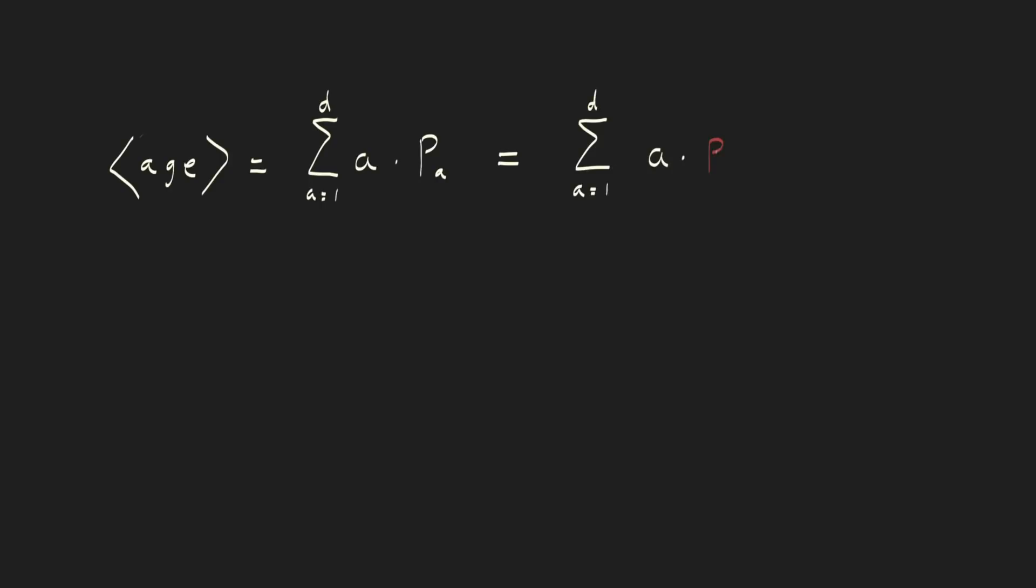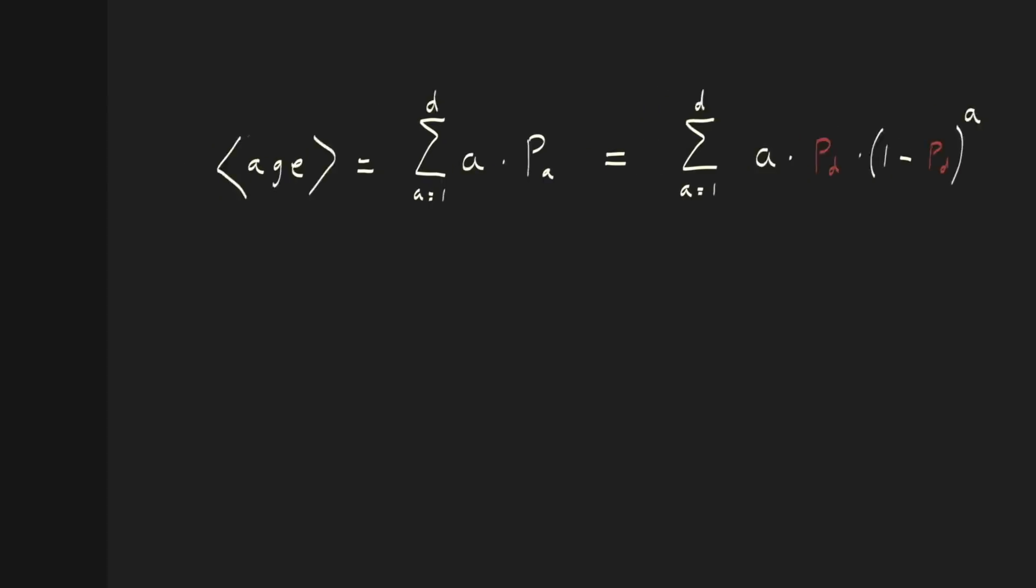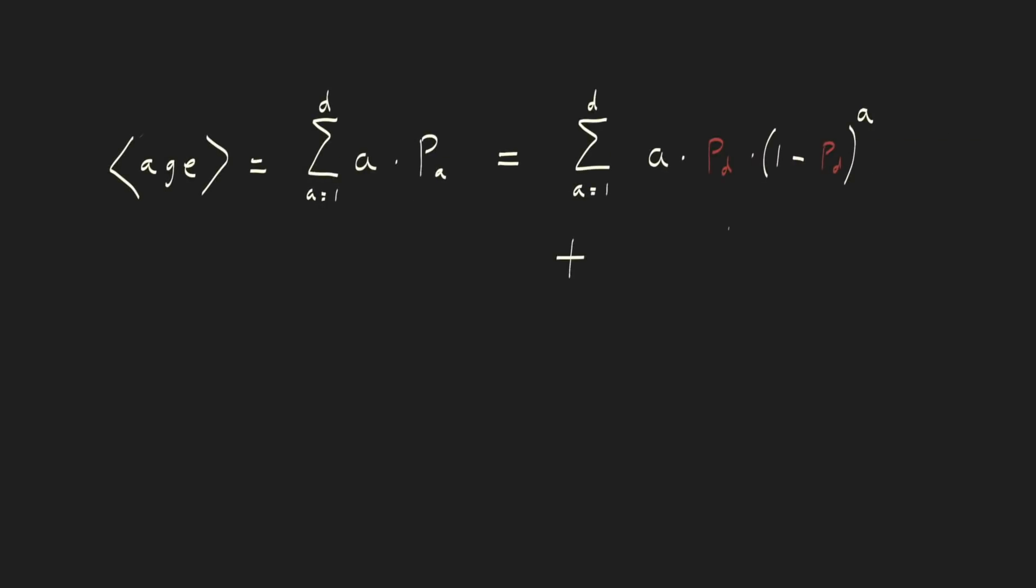Now we can rewrite the expectation value equation like this. But wait, there's one thing we forgot about. There's another way that a blob could be a certain age. It could be one of the original blobs that were around since the beginning and slowly dying off. They don't have a chance of being born. It's a certainty. They only have a chance of surviving. The chance of an original blob being d days old is just the chance of survival to the power of d. If we run the simulation for eight days, the only blobs that could be eight days old will be the original blobs. So we should only add the other age expressions up to the day before.